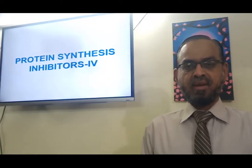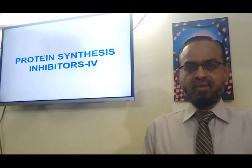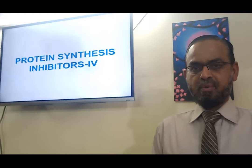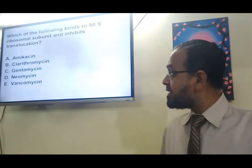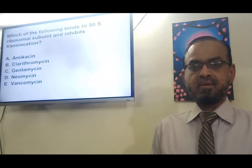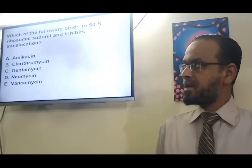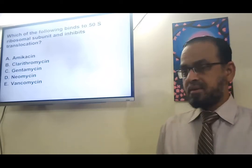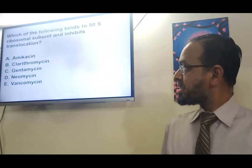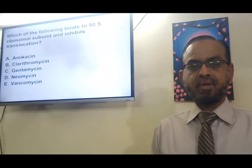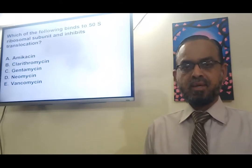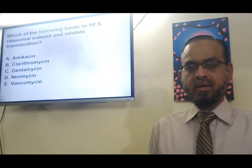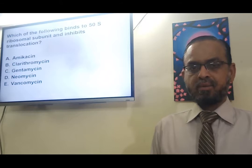Bismillah ar-Rahman ar-Rahim. We begin with our fourth lecture on protein synthesis inhibitors, starting with a recap of our previous lecture. The first question: which of these binds to the 50S ribosomal subunit and thereby inhibits translocation? The answer is B, clarithromycin. The macrolides bind to the 50S ribosomal subunit and inhibit translocation, which is the movement of the peptide chain from the A site back to the P site.